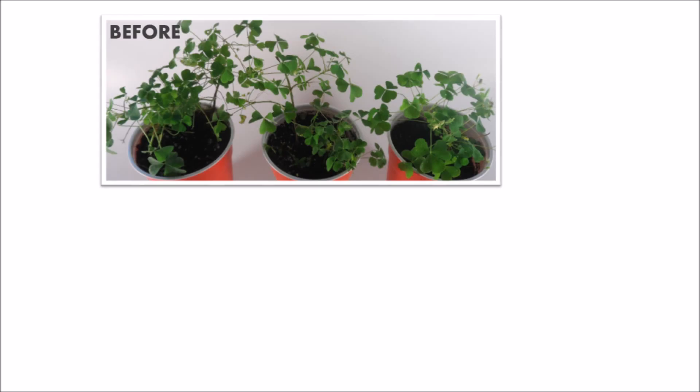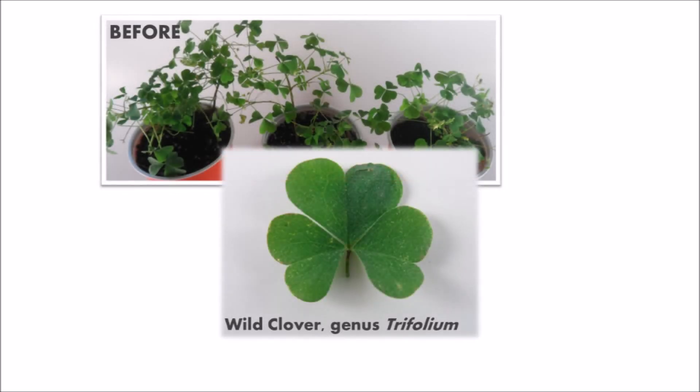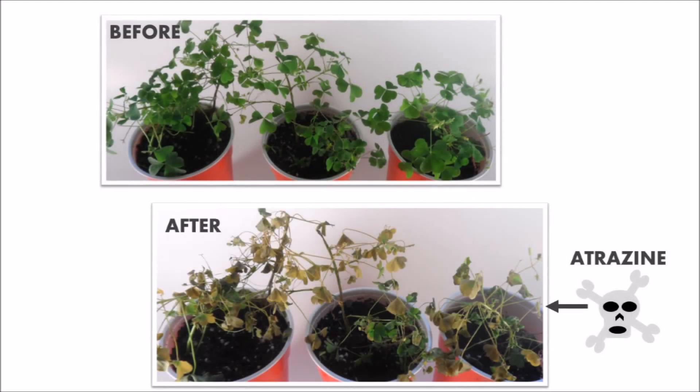Let's take a look at what happens to a plant that's susceptible to the killing effects of atrazine. We can set up a little experiment using wild clover, a common plant that might be growing in cornfields. If we treat the plant with a commercial herbicide containing atrazine, the results are pretty dramatic. We went from healthy and green to shriveled and brown.